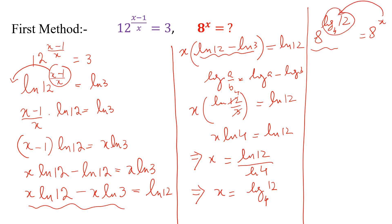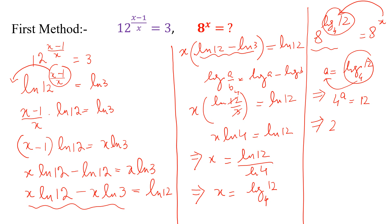This is the value of x, but we want to simplify it further. Let this value equal e, so e is equal to log with base 4 of 12. By the definition of log, 4 to the power e is equal to 12. Taking the square root, 2 to the power e is equal to 2 square root of 3 — this cannot be negative, so this is equation 1 and equation 2. Multiplying these two equations, 8 to the power e is equal to 24 square root of 3.